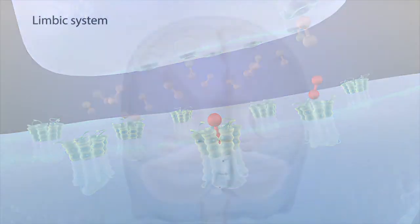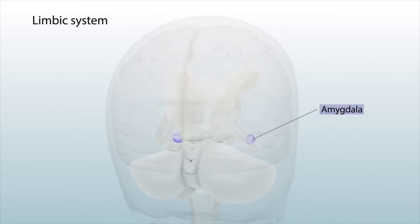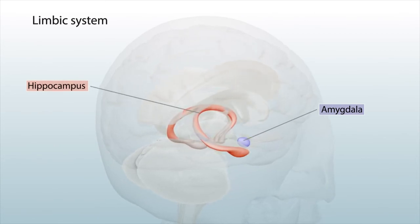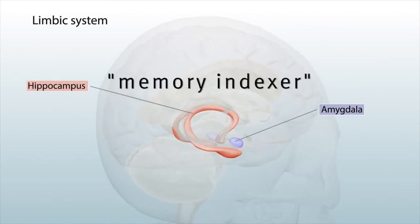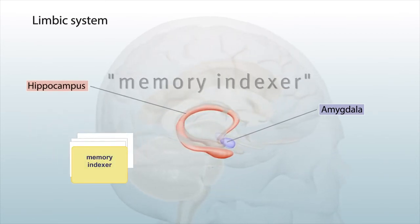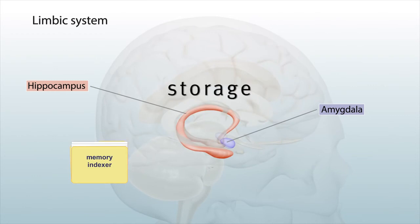The limbic system includes the amygdala, which processes emotions, and the hippocampus in the temporal lobe, which is like a memory indexer that sends memories to certain parts of the brain for storage and retrieves them when you need them.